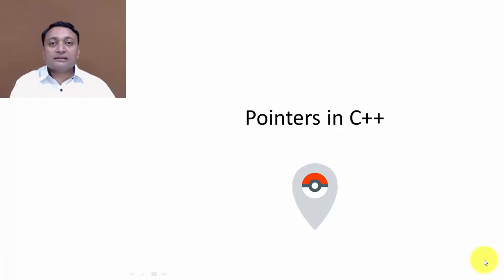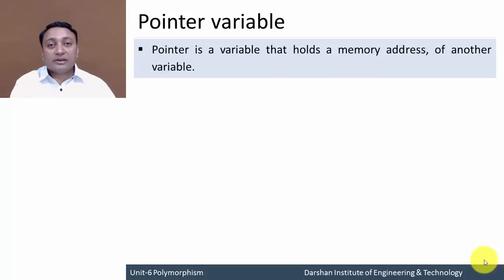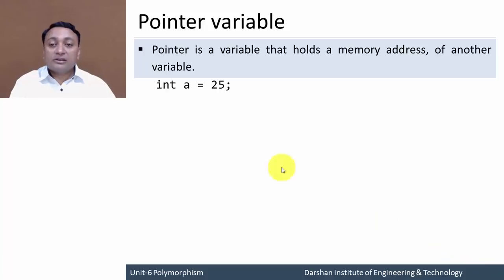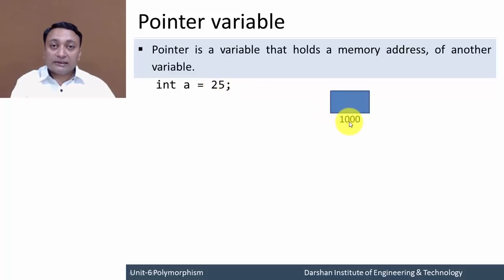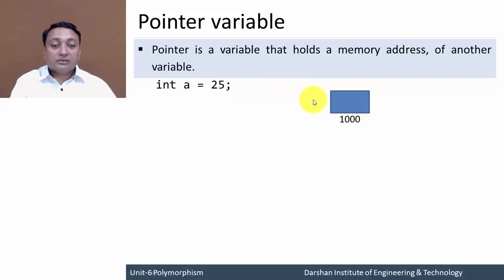In this lecture we are going to discuss pointers in C++. A pointer is a variable that is used to hold the memory address of another variable, or we can say it is used to point to another variable of similar data type. Here I have taken one variable 'a' of type integer holding value 25. Internally it will occupy a memory block with some address — the actual address would be a hexadecimal value, but for convenience we have taken a decimal value.